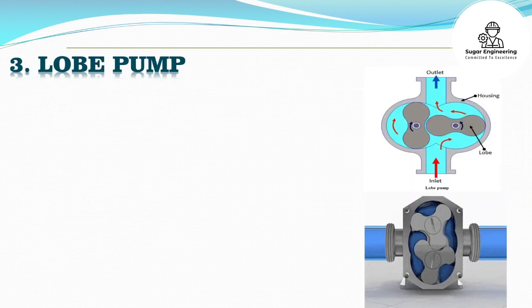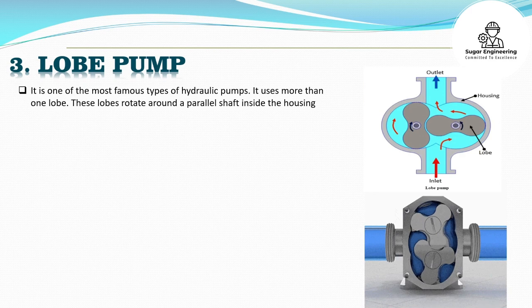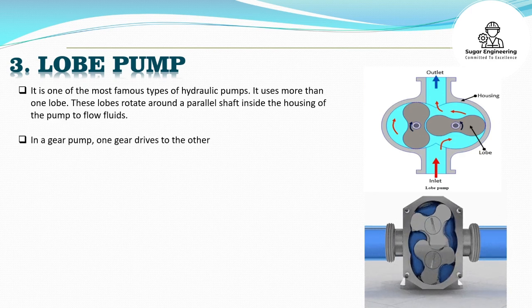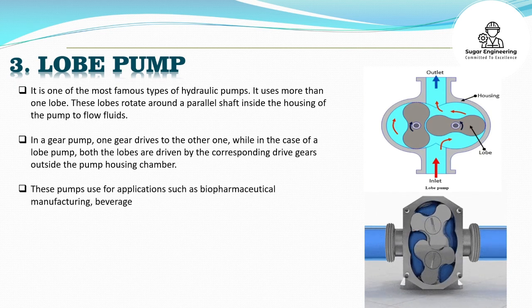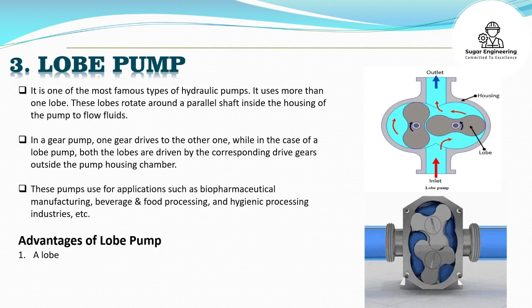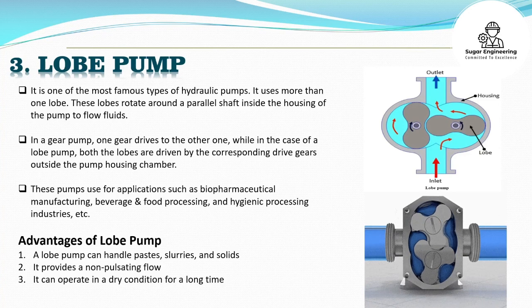A lobe pump is one of the most famous types of hydraulic pumps. It uses more than one lobe. These lobes rotate around a parallel shaft inside the housing of the pump to flow fluids. In a gear pump, one gear drives the other, while in the case of a lobe pump, both lobes are driven by corresponding drive gears outside the pump housing chamber. These pumps are used for applications such as biopharmaceutical manufacturing, beverage and food processing, and hygienic processing industries.